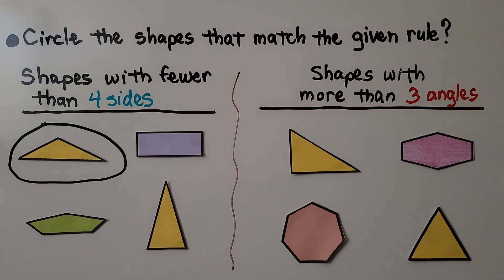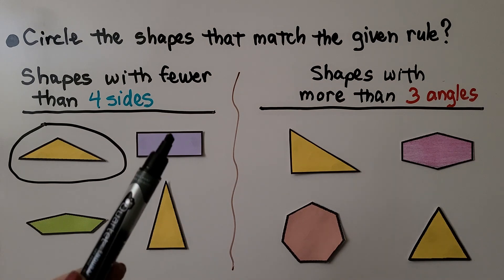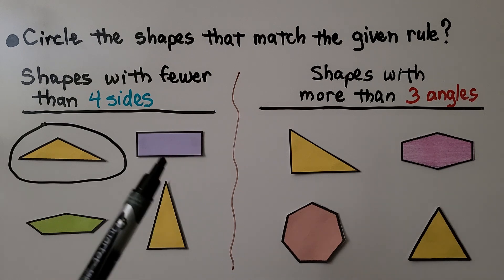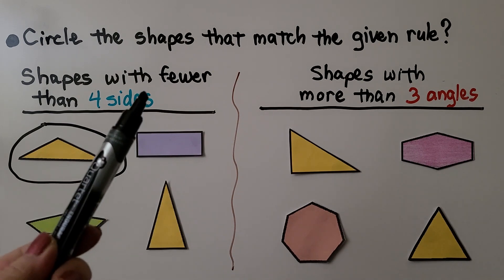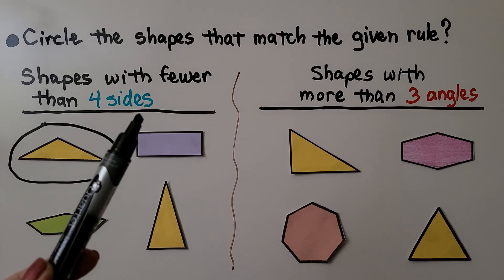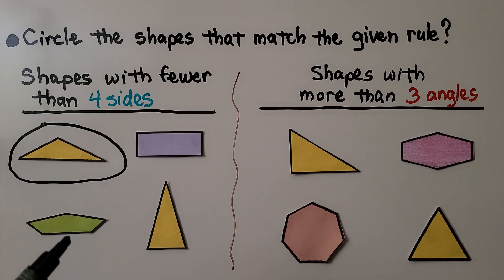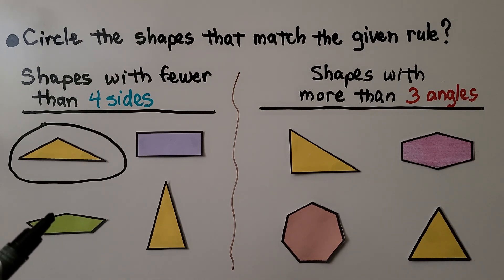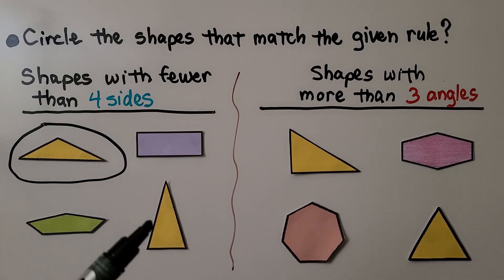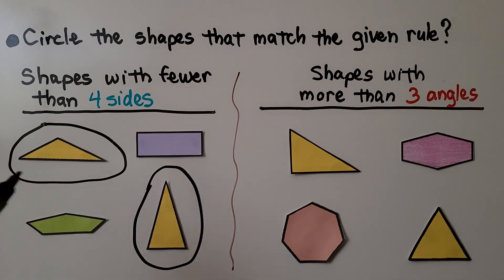Here we have a rectangle. It's a quadrilateral and it has one, two, three, four sides. But it's supposed to be fewer than four sides, so the rectangle doesn't fit. Here we have a pentagon with one, two, three, four, five sides. Five is not fewer than four, so this one doesn't count. And here we have another triangle with one, two, three sides — so that fits. The two triangles have fewer than four sides.